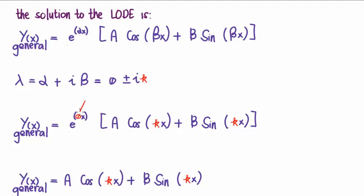Well, immediately we have e to the naught. Well, e to the naught is going to be 1. So this term will go away. And then we're simply going to have a cos kx and b sine kx.